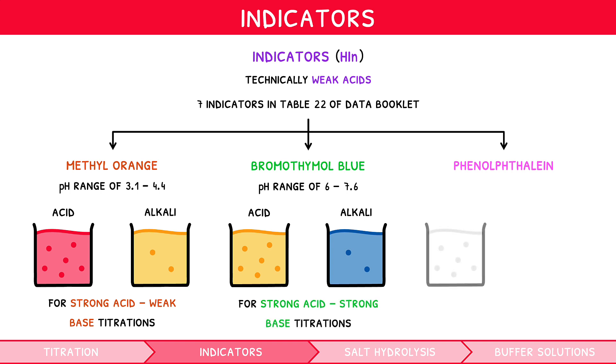Phenolphthalein is colorless in acid and pink in alkali, and has a pH range of 8.3 to 10, making it suitable for weak acid, strong base titrations.